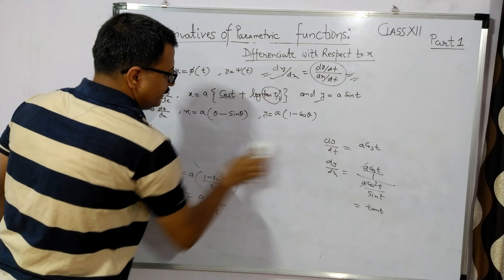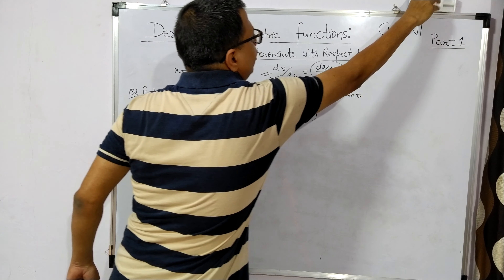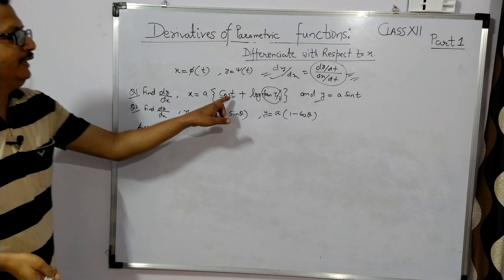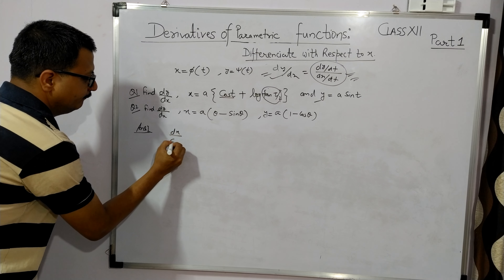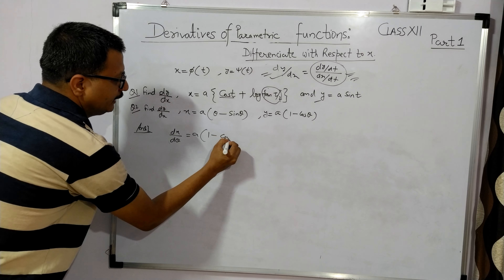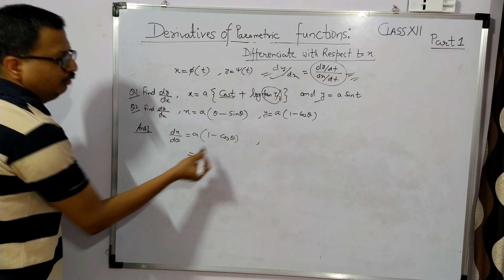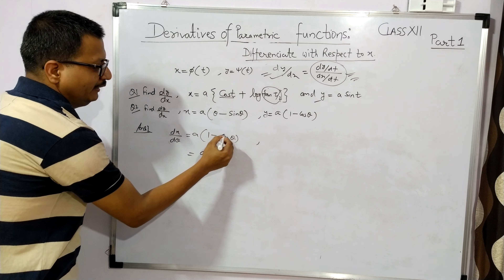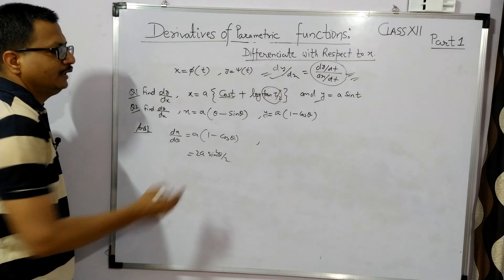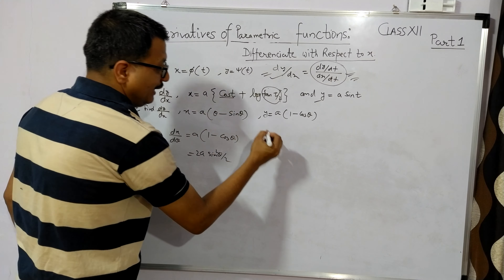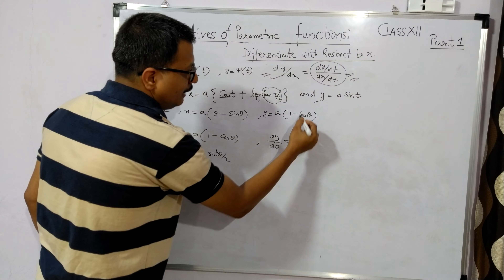Now the second question. यहाँ parameter θ है, तो dx/dθ निकालते हैं। Differentiate करने पर 1 - cos θ आएगा। इसको formula से simplify करें: 1 - 2sin²(θ/2) → 2sin²(θ/2) आएगा। अब dy/dθ निकालते हैं: a में से constant का derivative 0 होगा।